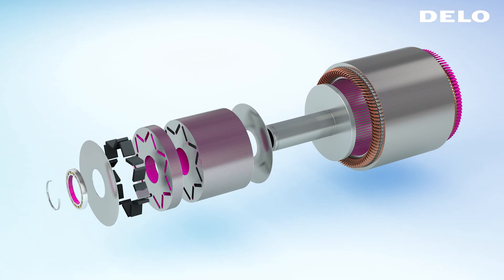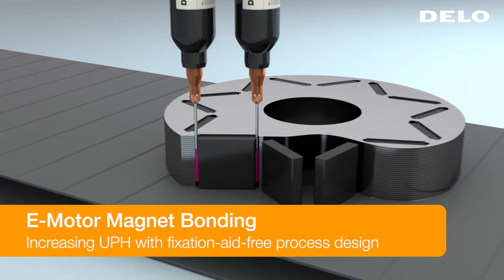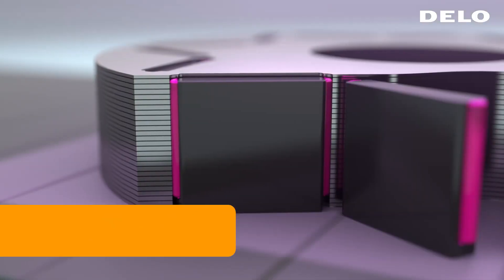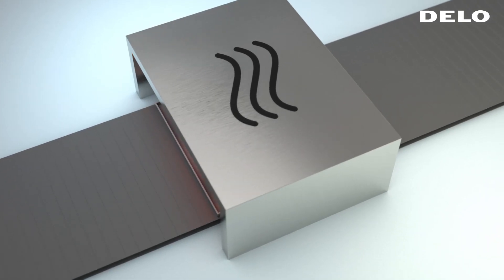In electric motor assembly processes, one of the most important parameters is cycle time. Until now, fixation aids had to be used during manufacture, adding additional time for their assembly and disassembly.